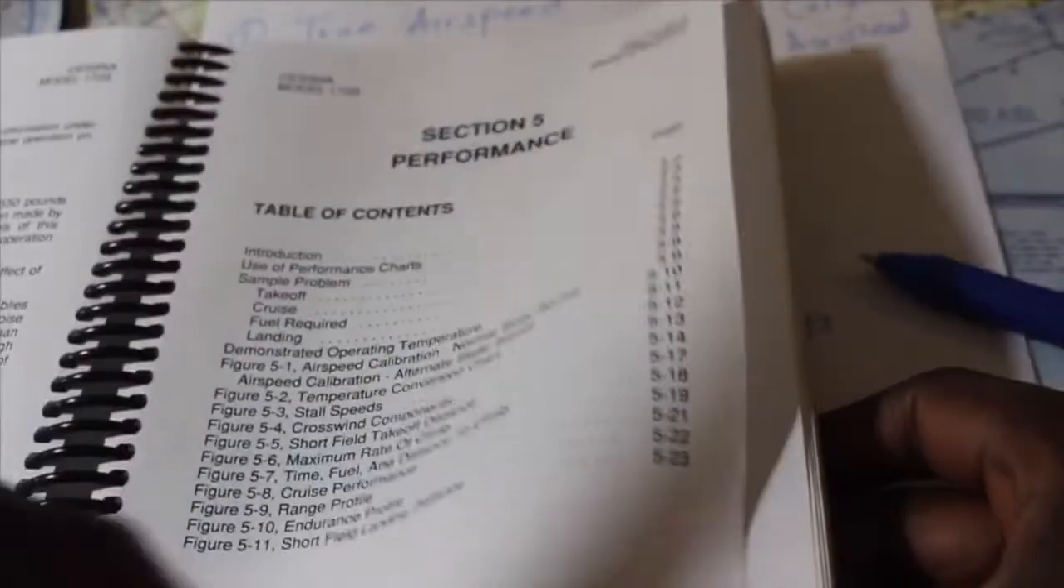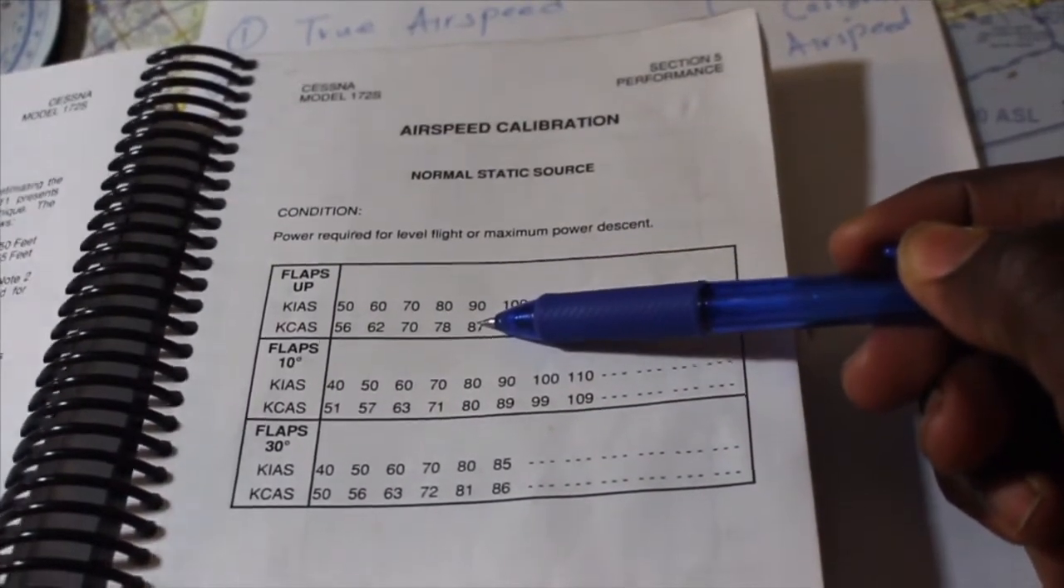Now that we have calibrated airspeed, let's use that to find our indicated airspeed using our pilot operating handbook. Using the pilot operating handbook, you slide to the performance section. In a 172S, you go to normal static source, and you have your calibrated airspeed and corresponding indicated airspeed.